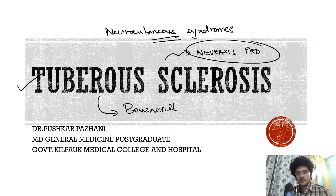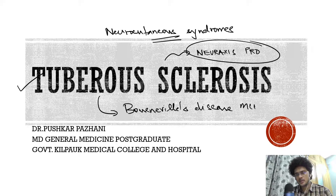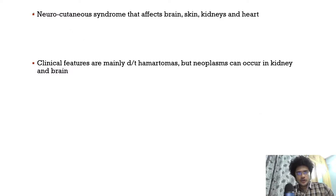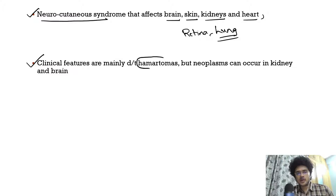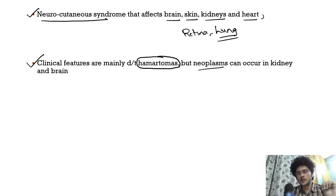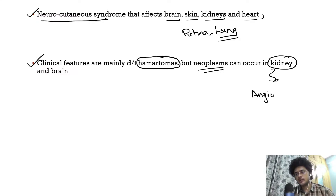Remember, the other name for tuberous sclerosis is Bourneville's disease — an important MCQ point. Tuberous sclerosis is a neurocutaneous syndrome that predominantly affects the brain, skin, kidneys, heart, retina, and in female patients, the lungs. Clinical features are mainly due to hamartomas, but neoplasms also occur — in the kidney as angiomyolipomas.